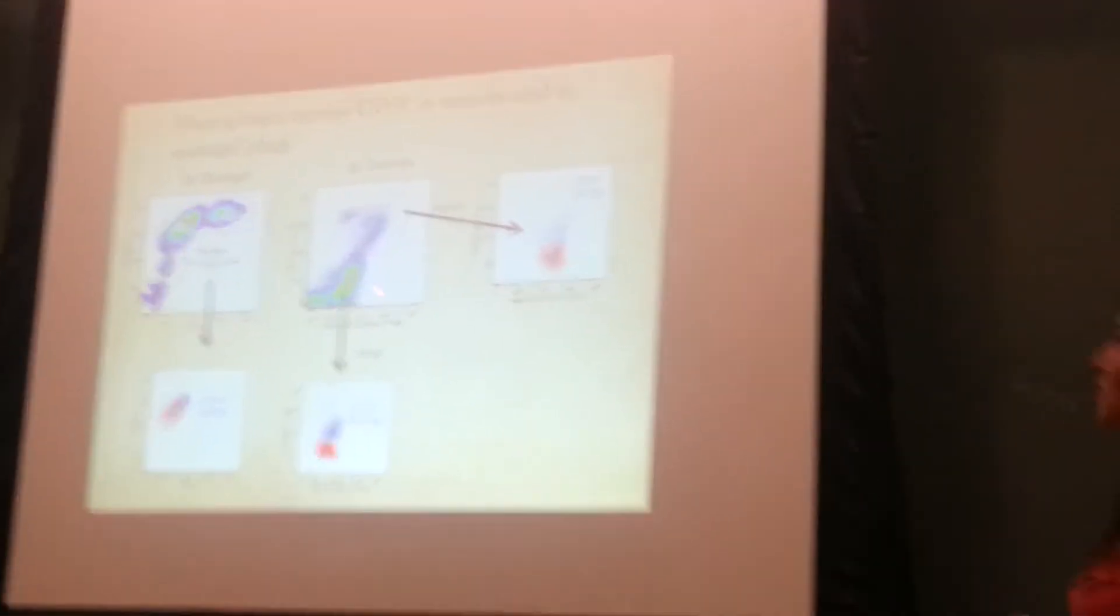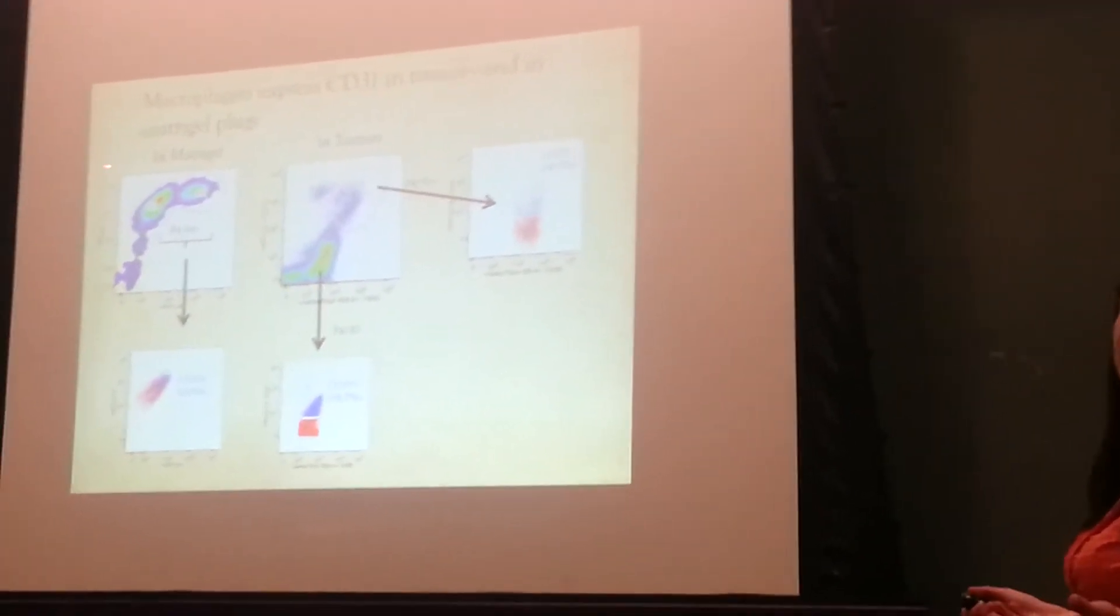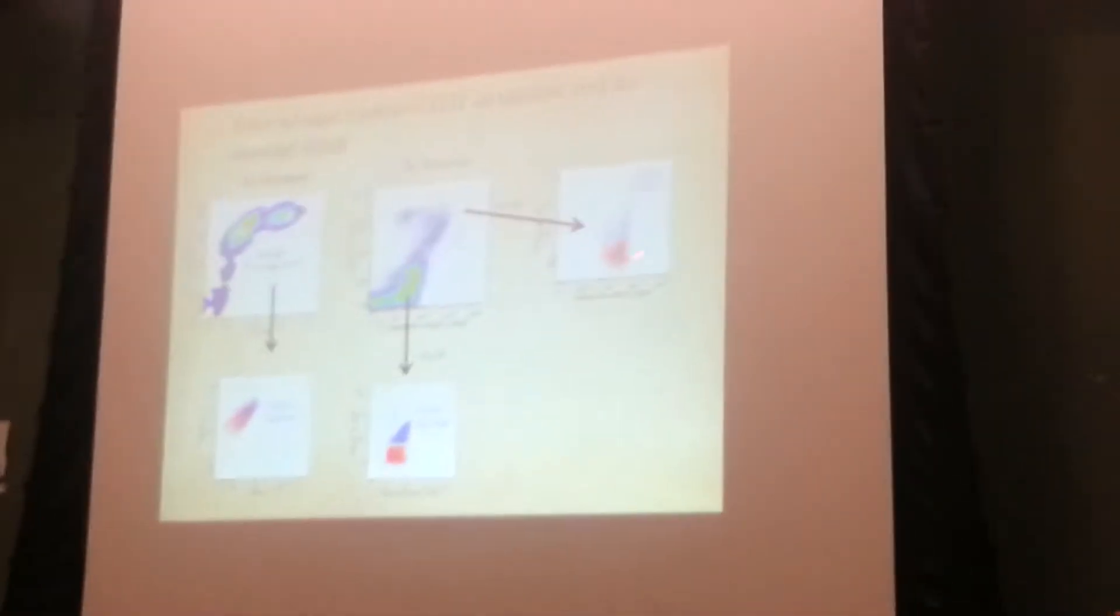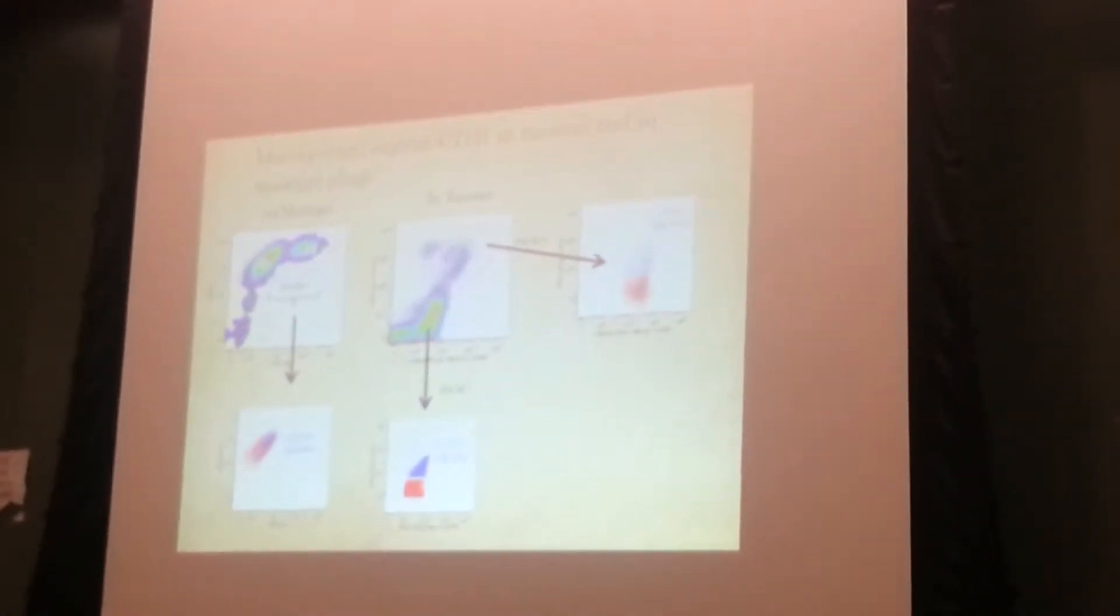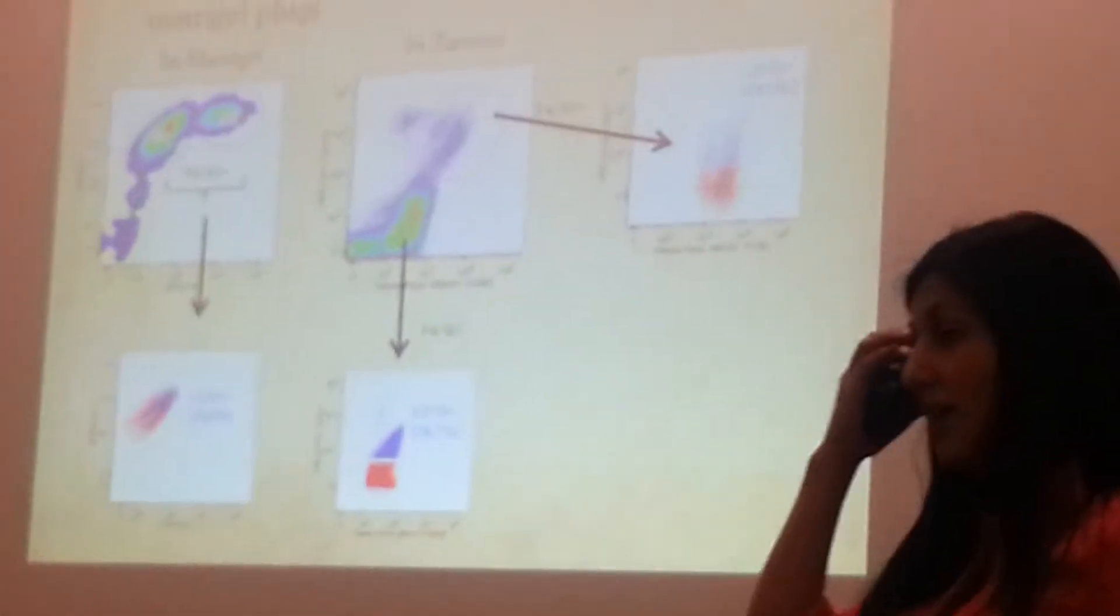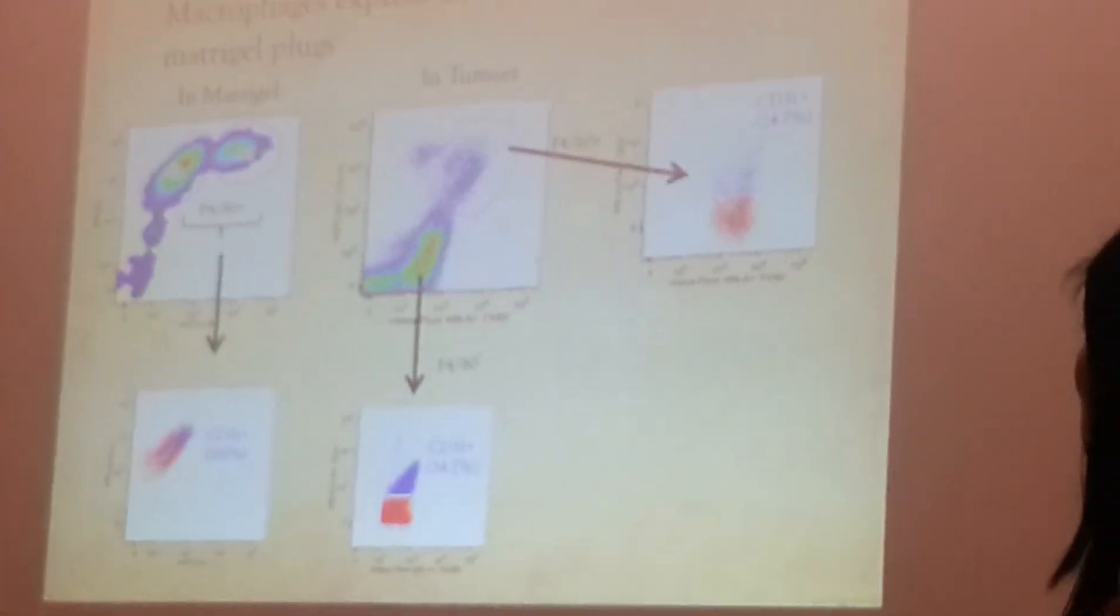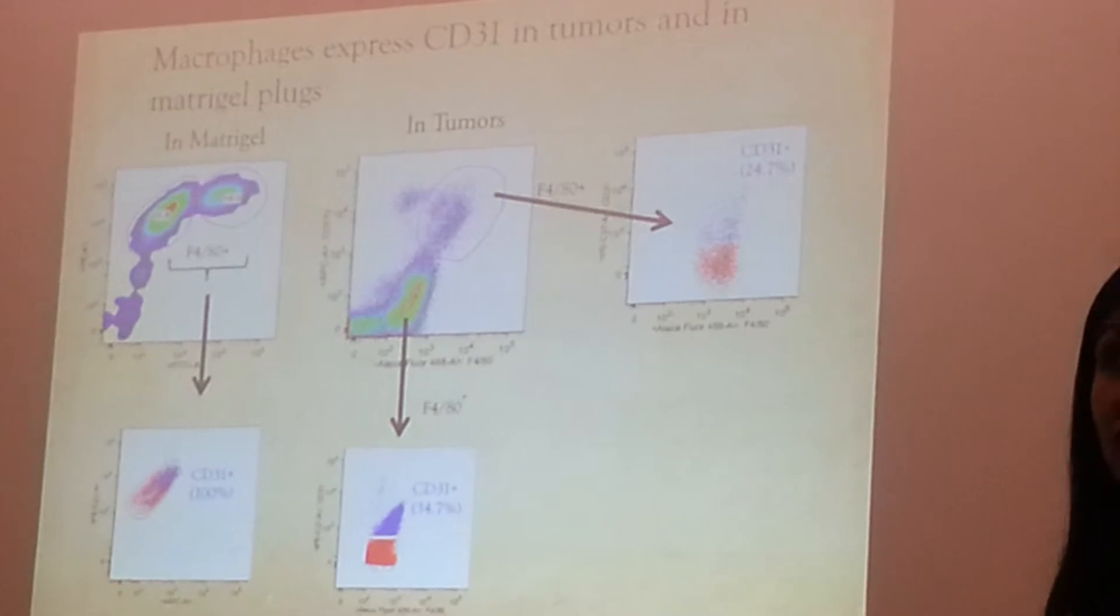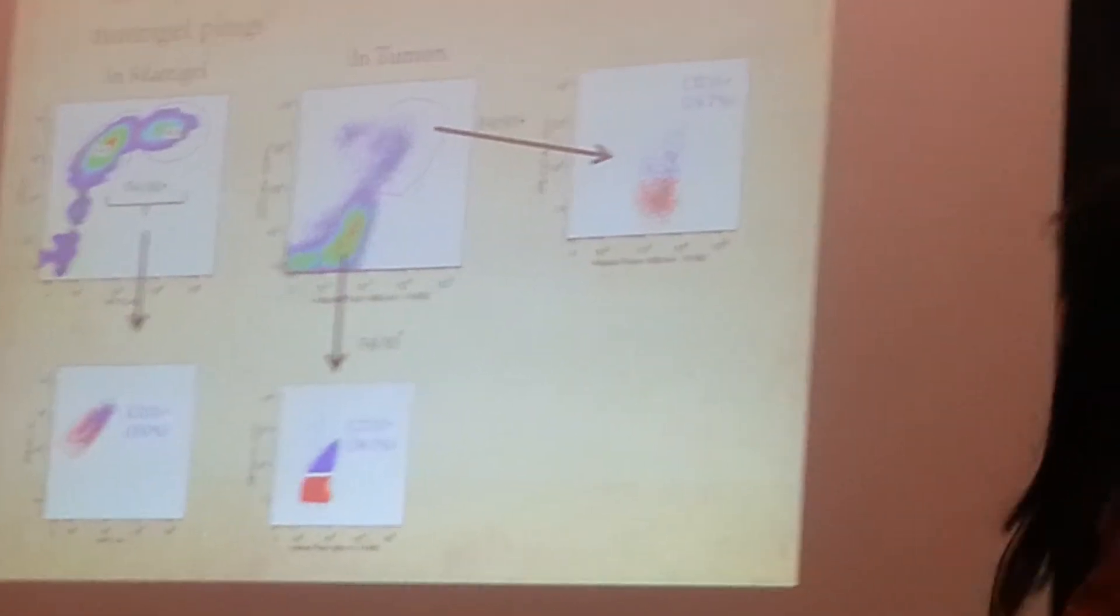I moved to the tumor to check what happened with the macrophages in the tumor. And surprisingly, macrophages in the tumor are also positive for CD31. Not all of them, but an important percentage. Macrophages are positive in the tumor and in the matrigel, and they can have endothelial, angiogenic work.